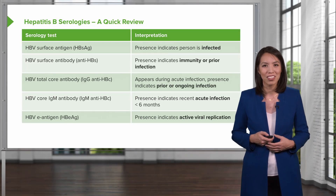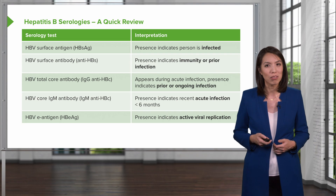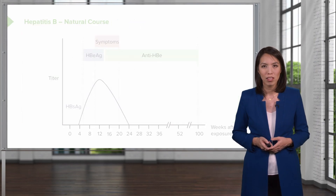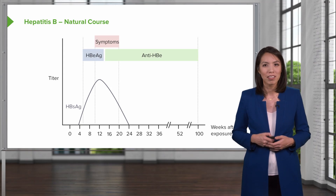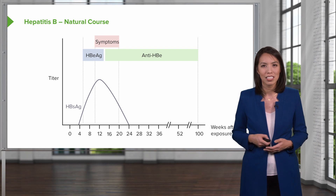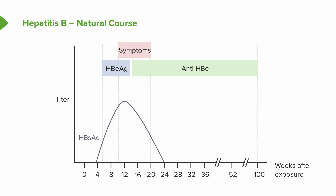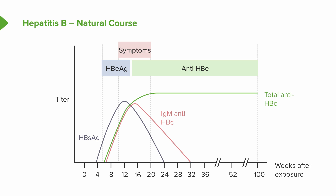Now let's go through some common scenarios, but first let's look at what these antibodies and antigens look like over the course of disease. During weeks 4 through 24 of the initial infection, the hepatitis B surface antigen becomes positive. Over time, you develop an IgM anti-core antibody, which then disappears. You also develop the total core antibody — the IgG — which develops after infection and remains positive for the rest of that person's lifetime.